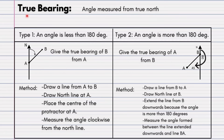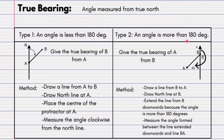True bearing is not difficult — it is confusing, and there is a difference between the two. True bearing is the angle measured from true north. There are two types: Type 1 is an angle less than 180 degrees, which is the simpler one, and Type 2 is an angle more than 180 degrees.